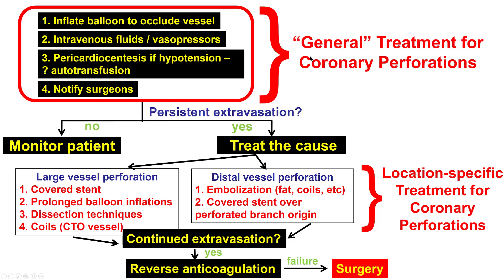This is the algorithm for treating a perforation. The first step is to inflate a balloon to stop bleeding into the pericardium, give fluids, and then, if there is tamponade, perform pericardiocentesis and call the surgeon, although surgery is rarely needed. If there is persistent extravasation, treat the cause: for large vessel perforation, covered stents or prolonged balloon inflations can work. However, in this situation we had an occluded CTO vessel — and this is the one scenario in which coils can be used for large vessel perforation to seal it.